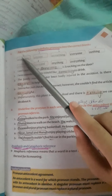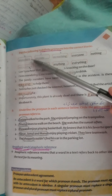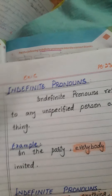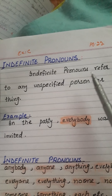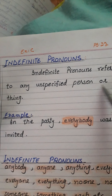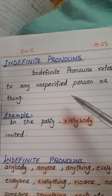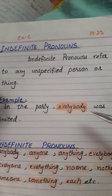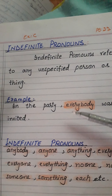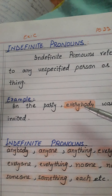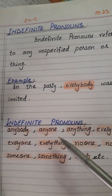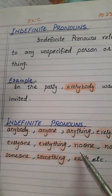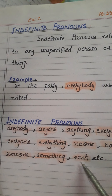Now exercise C, page 22. Put the following indefinite pronouns into the correct blanks. First, see what are indefinite pronouns. Indefinite pronouns refer to any unspecified person or thing. یعنی کس person یا thing کے لیے use ہوتے ہیں؟ Unspecified — جو specified نہ ہو۔ Example: 'In the party, everybody was invited.' Some indefinite pronouns are: anybody, anyone, anything, everybody, everyone, everything, no one, nothing, someone, something, each, etc.